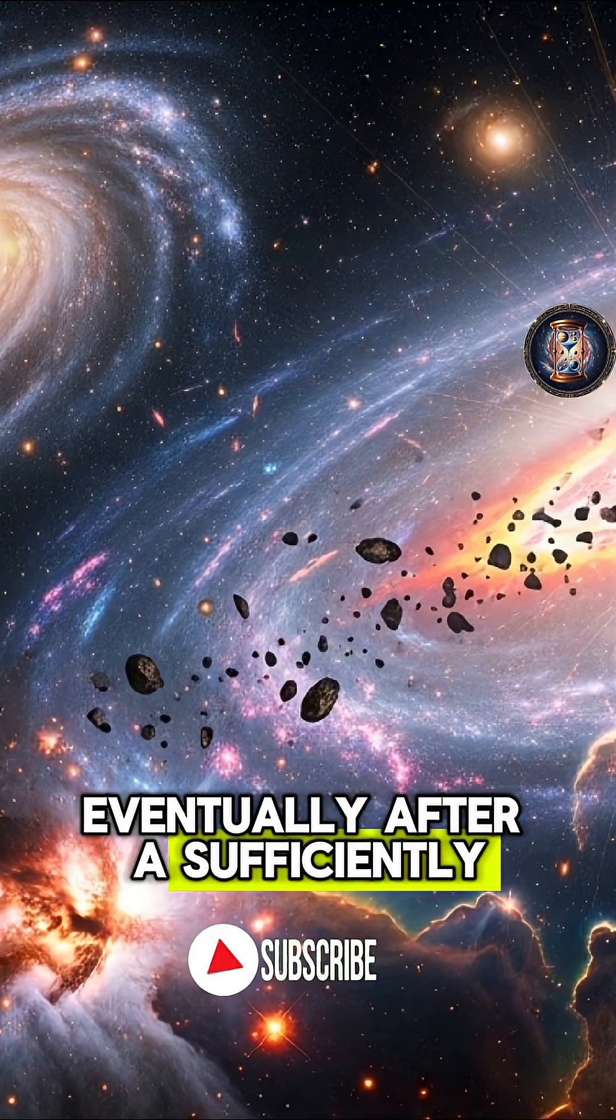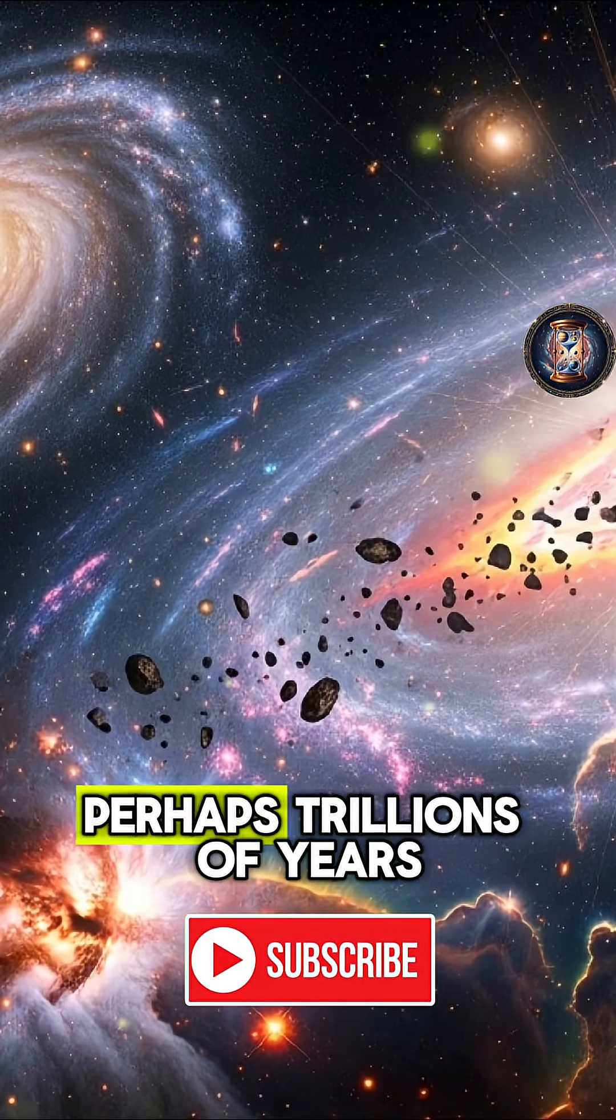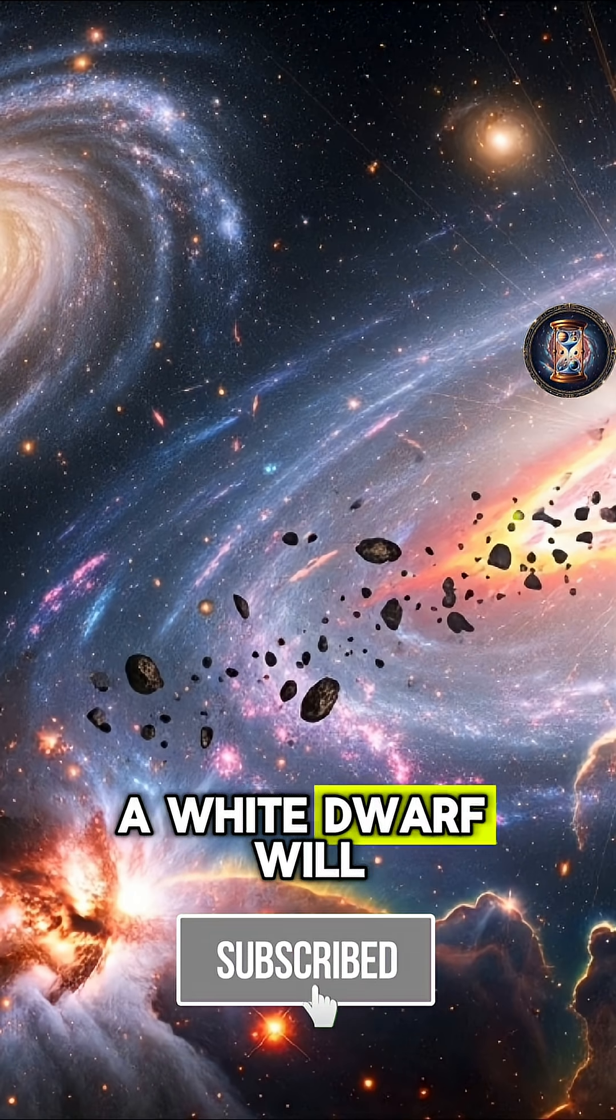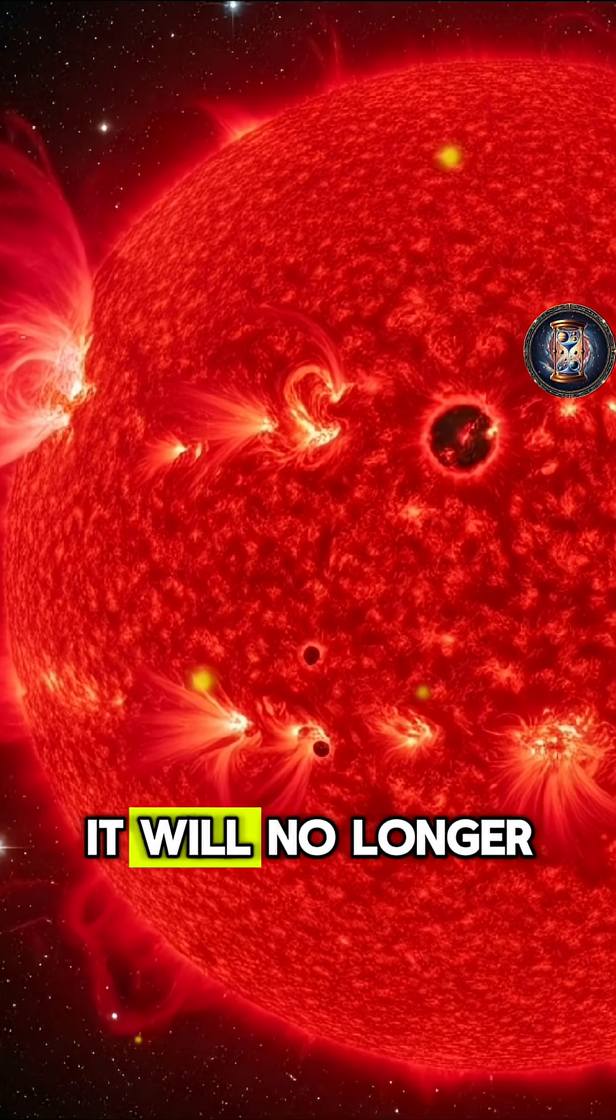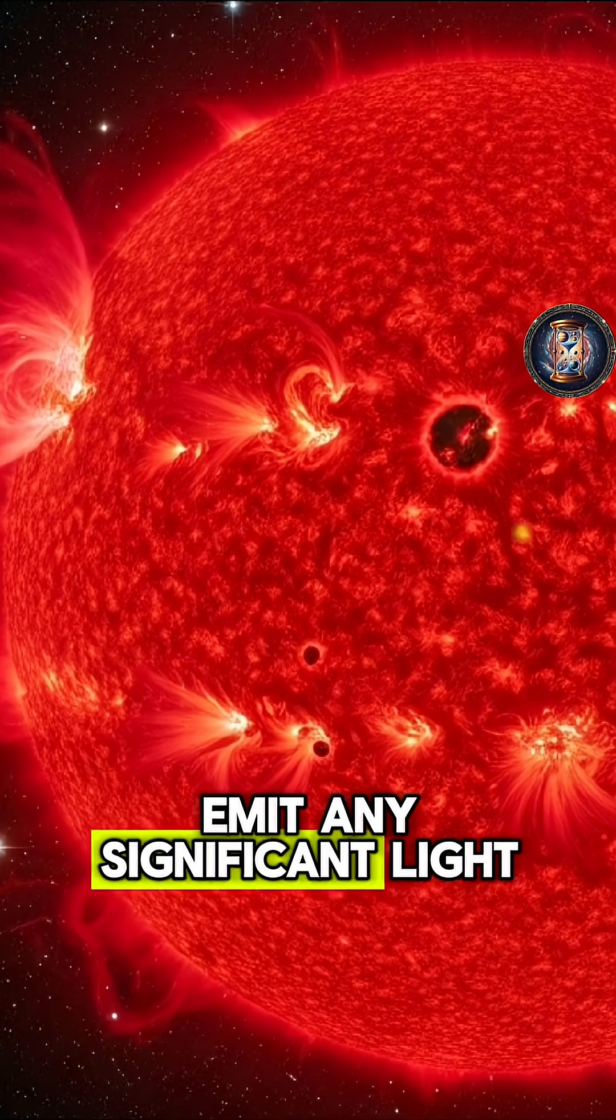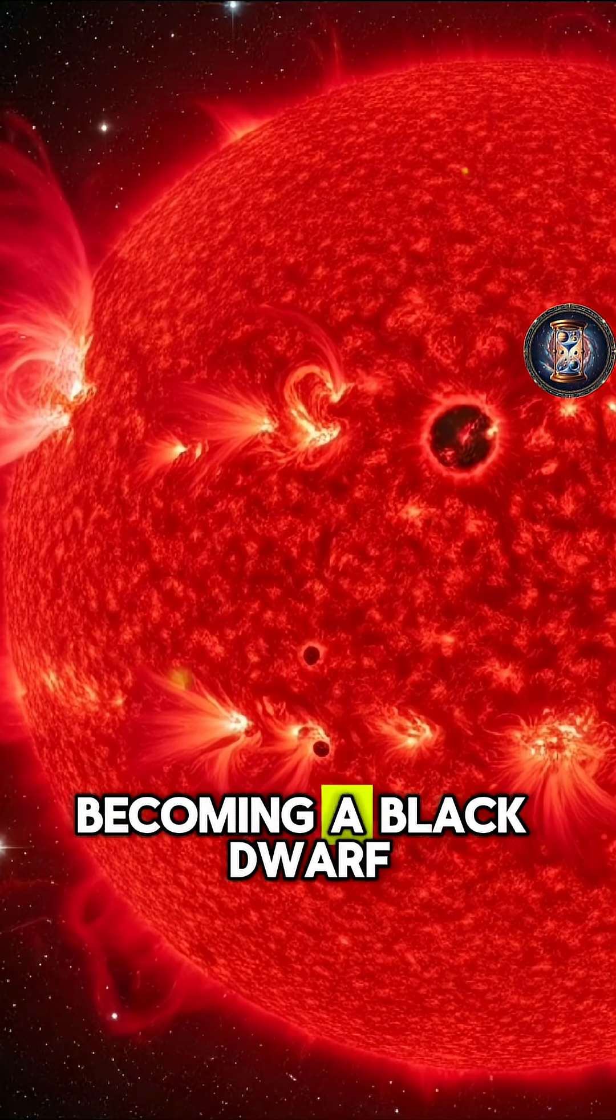Eventually, after a sufficiently long period, perhaps trillions of years, a white dwarf will cool completely. It will no longer emit any significant light or heat, becoming a black dwarf.